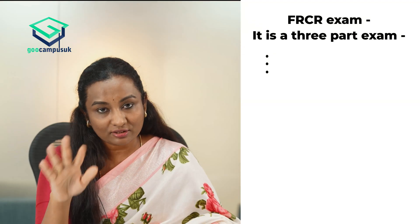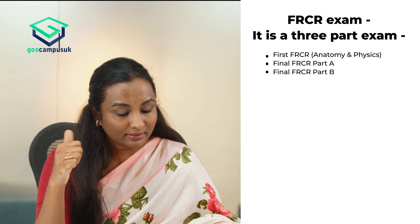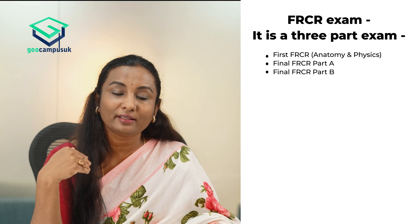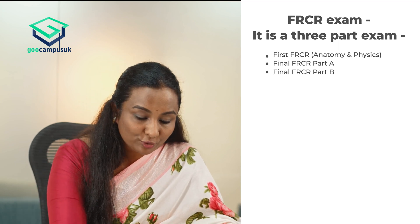Trainees are normally expected to complete the FRCR exam — the Fellow of Royal College of Radiologists — by the end of ST3 level. The FRCR examination is set by the Royal College of Radiologists in the UK and it is a three-part exam: the first part is called First FRCR, then Final FRCR Part A, and then Final FRCR Part B. You have to pass all your exams by the end of ST3, and then you start your specialty interest from ST4 level.